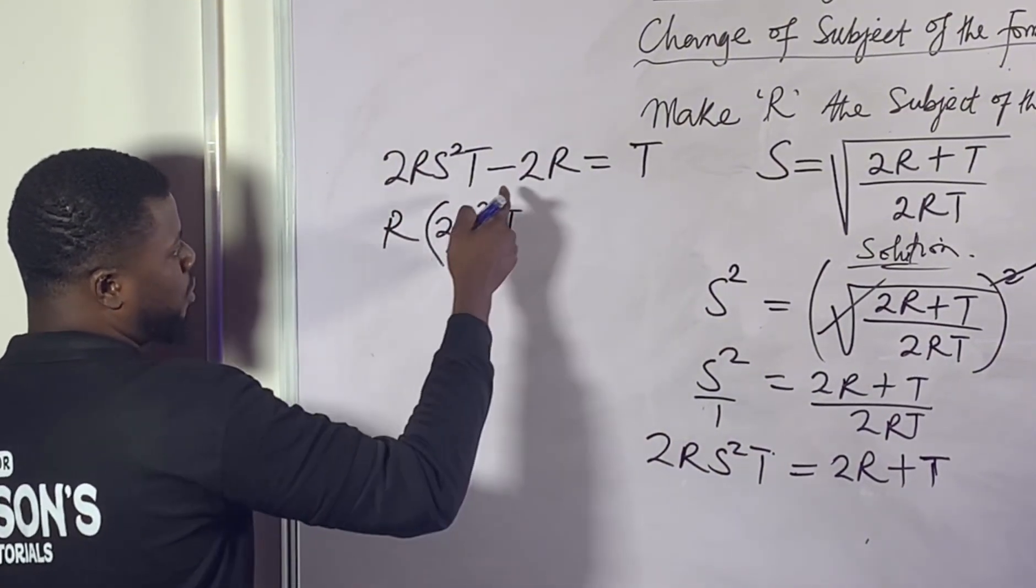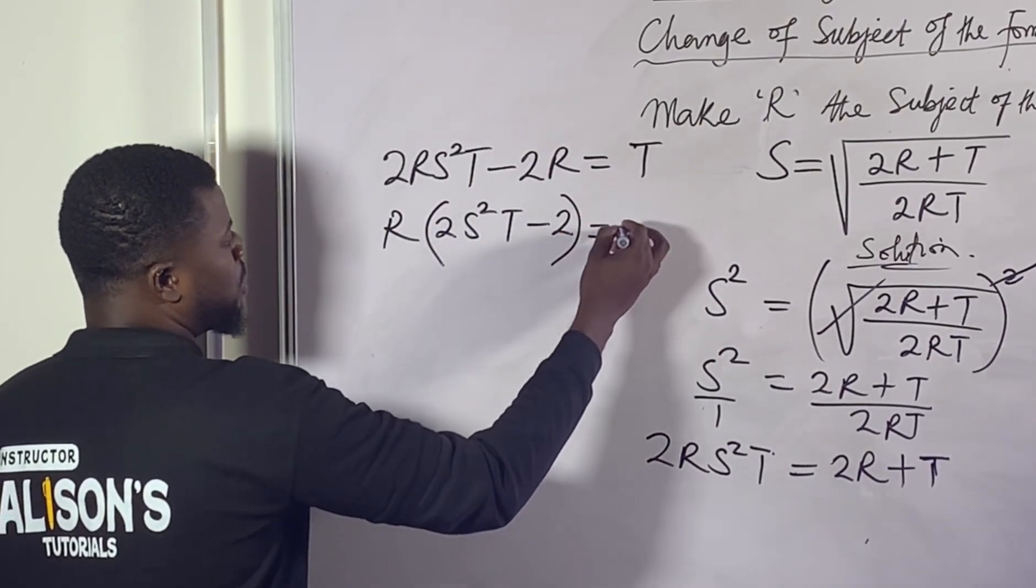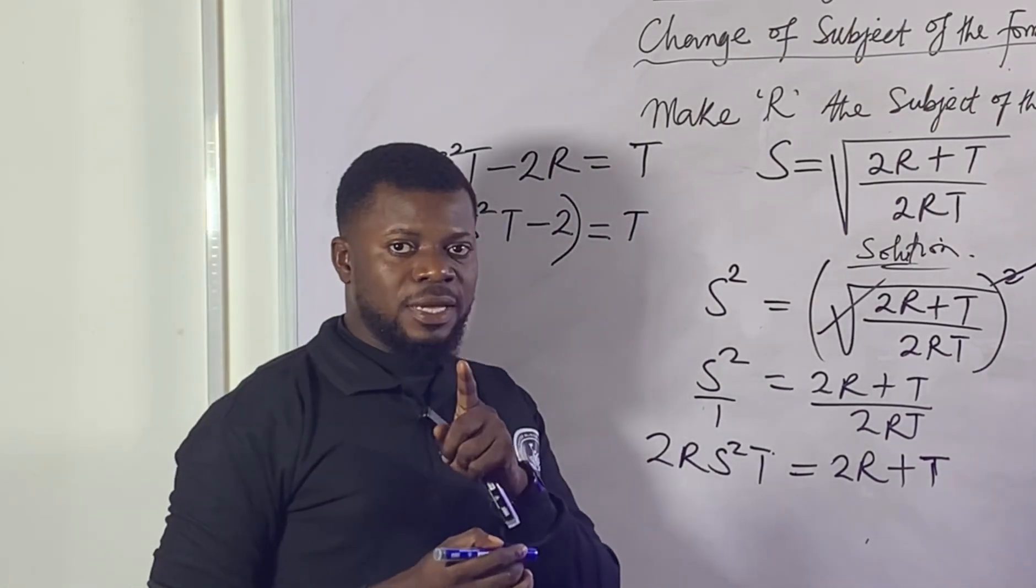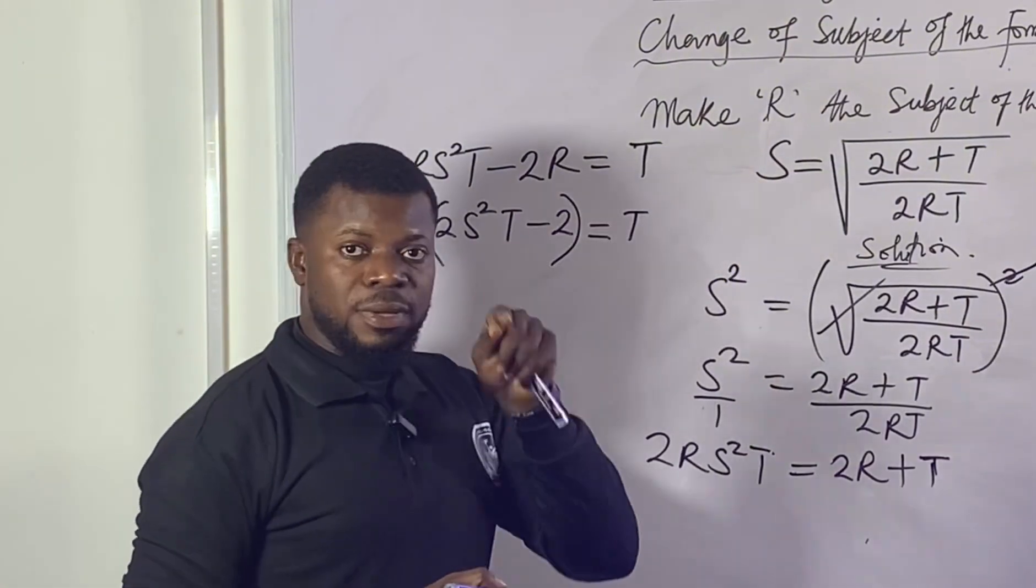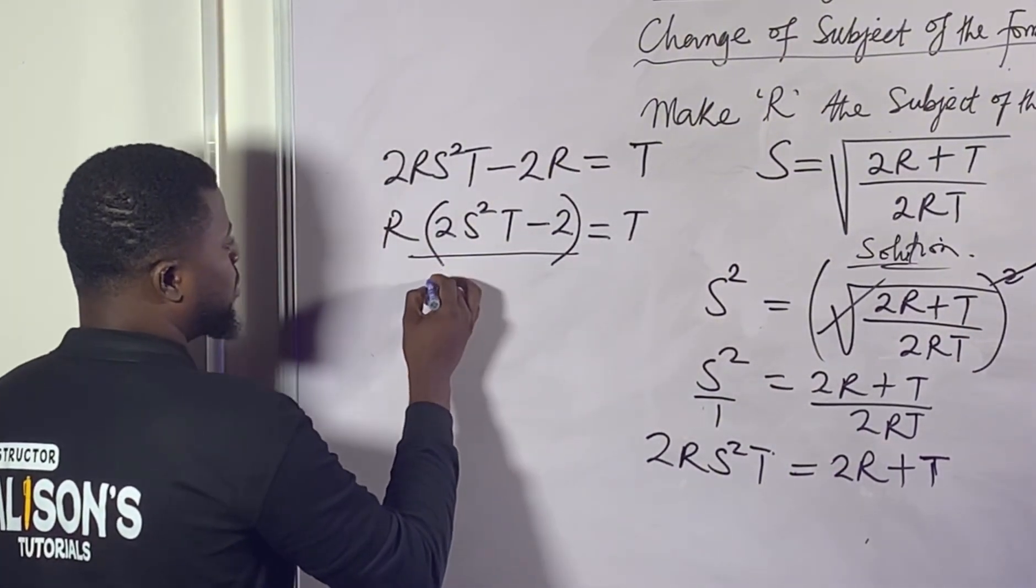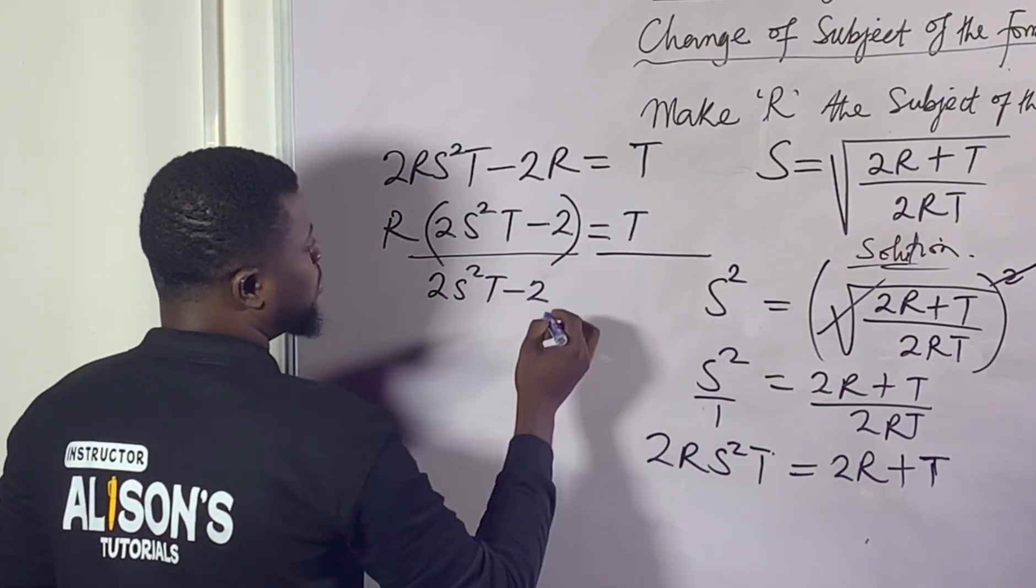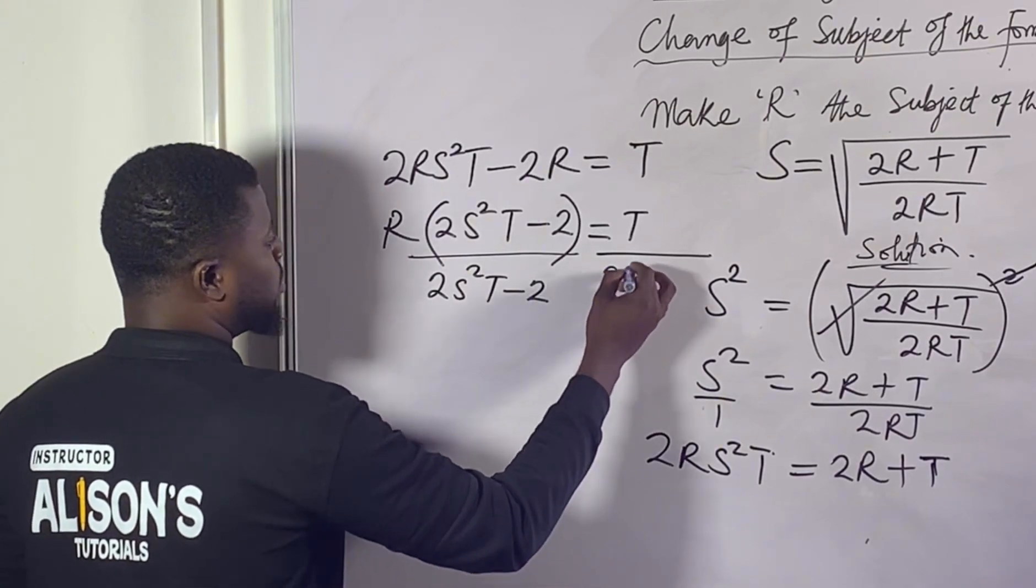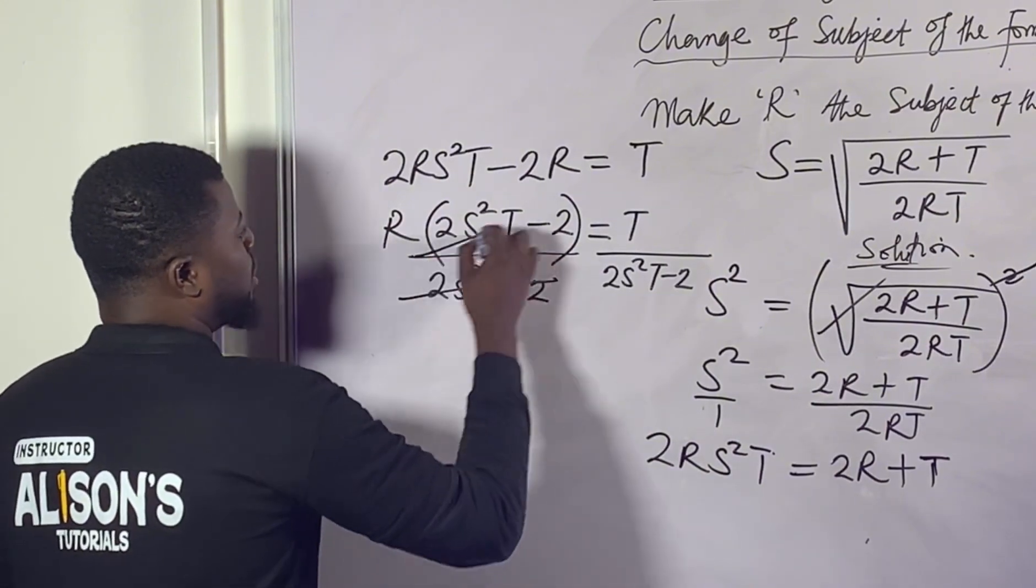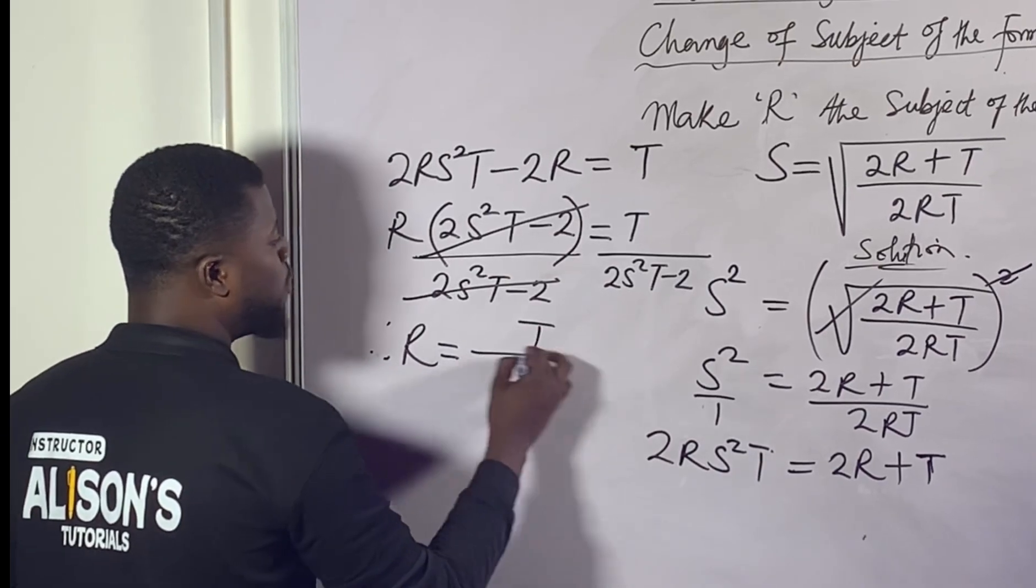Now we want to make R the subject of the relation. We want to make R to stand alone. So you divide both sides by 2S²T minus 2. You do the same thing to this one, which is 2S²T minus 2. This can easily cancel out with this. Therefore R equals T over...